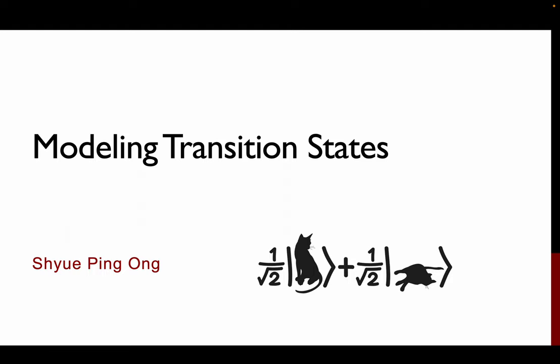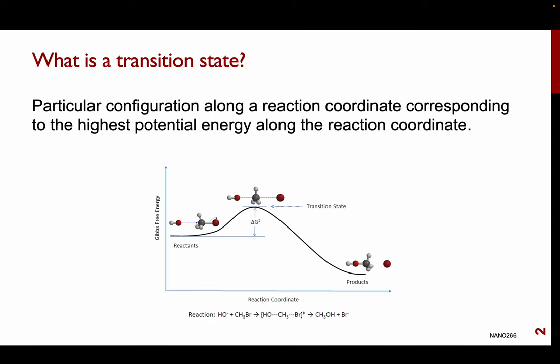I'm going to start by going through how to model transition states. The reason I want to cover transition states first is because for most of you, this is one of the key things that you will calculate using DFT calculations. A transition state is a configuration that occurs along some reaction coordinate that corresponds to the highest potential energy along that reaction coordinate.